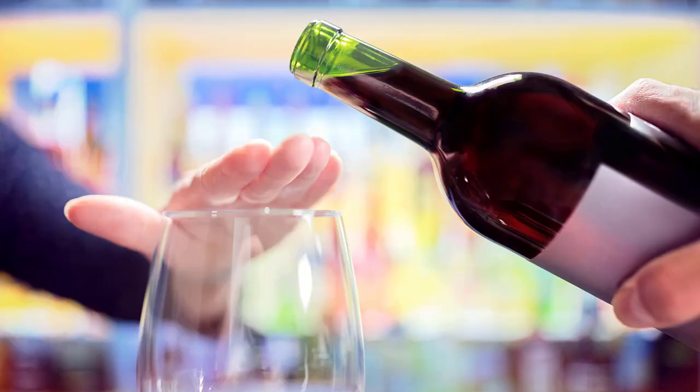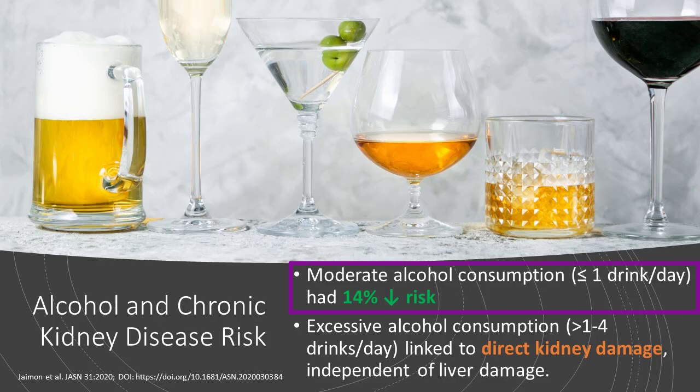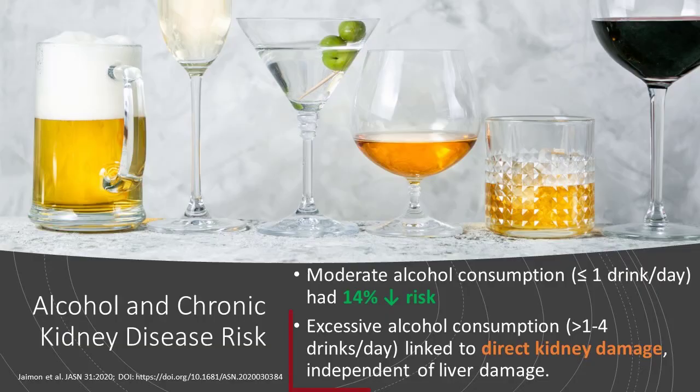One thing that really surprised me about the study and I wasn't expecting was alcohol intake. So what did they find? What they showed was that those consuming moderate alcohol intake, which is essentially one drink or less per day, had a 14% lower risk. Those who had excessive alcohol consumption, meaning more than one to four drinks a day, actually had evidence for direct kidney damage. That's irregardless of the damage to the liver. It's actually affecting the kidneys directly. So alcohol moderate, one drink or less per day, was actually shown to have a protective benefit.